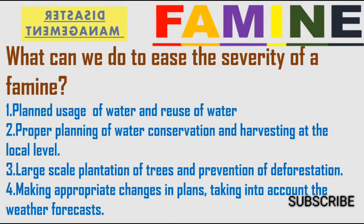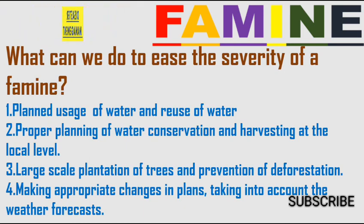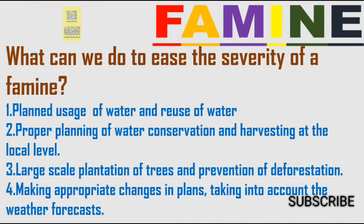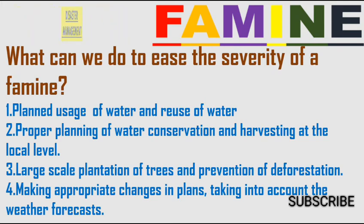What can we do to ease the severity of famine? Planned use and reusing of water, proper planning of water conservation and harvesting at the local level, large-scale plantation of trees and prevention of deforestation, and making appropriate plans taking into account weather forecasts — these measures can help us minimize the severity of famine, even if we cannot stop it entirely.